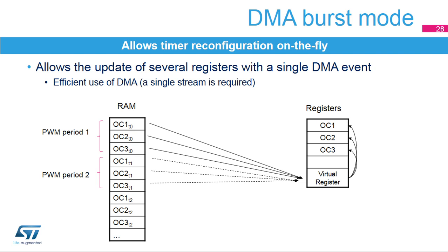The DMA must be programmed in memory to peripheral mode, pointing to a unique location in the timer virtual register TIMX DMAR. When the update event occurs, the timer sends a number of DMA requests corresponding to the programmed burst length. Each value is then automatically redirected from the virtual register into the active register targeted. On the next update event, three new compare values are transferred again.